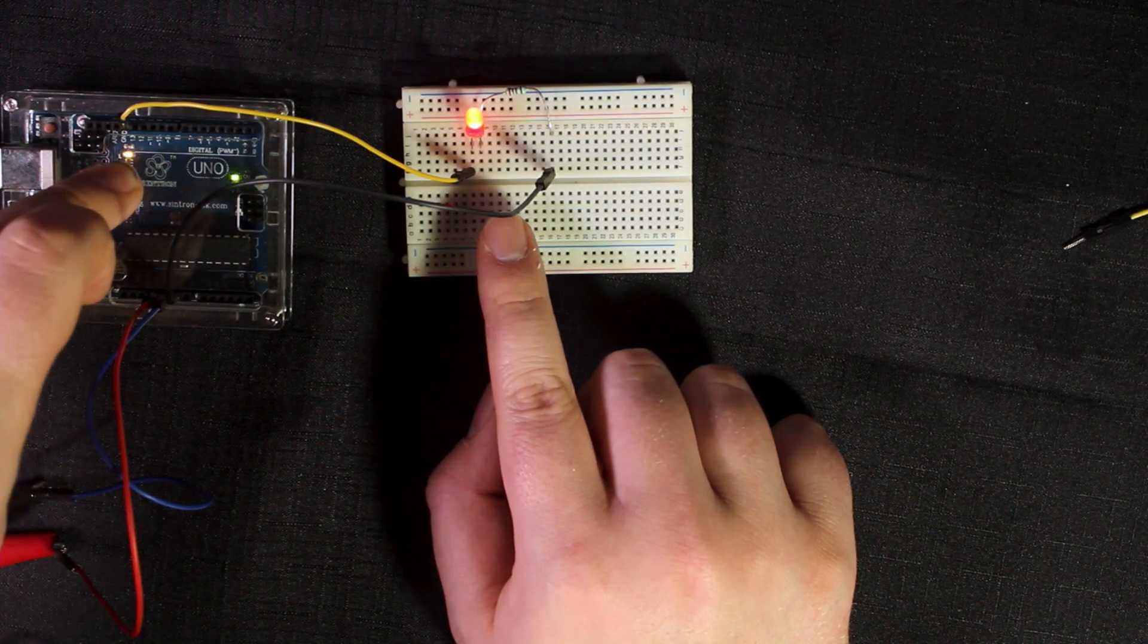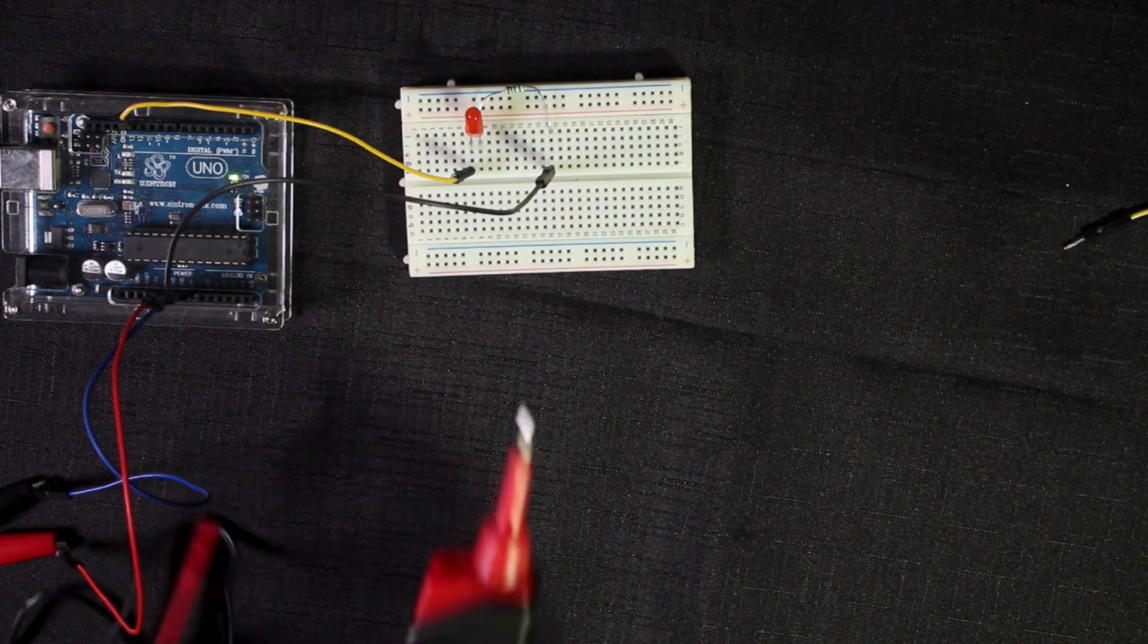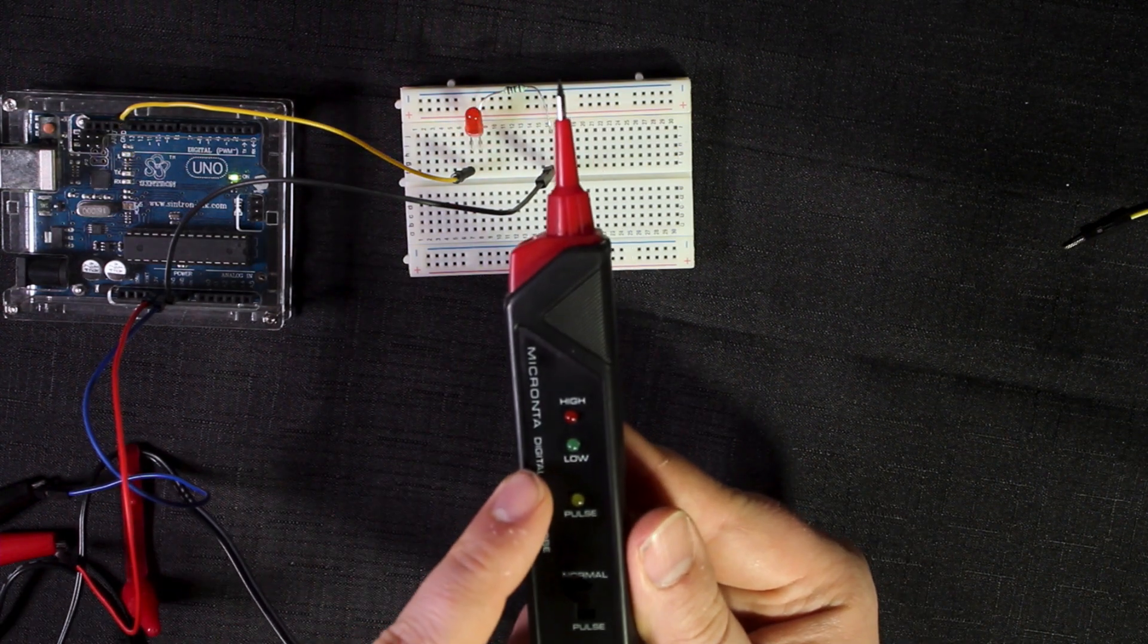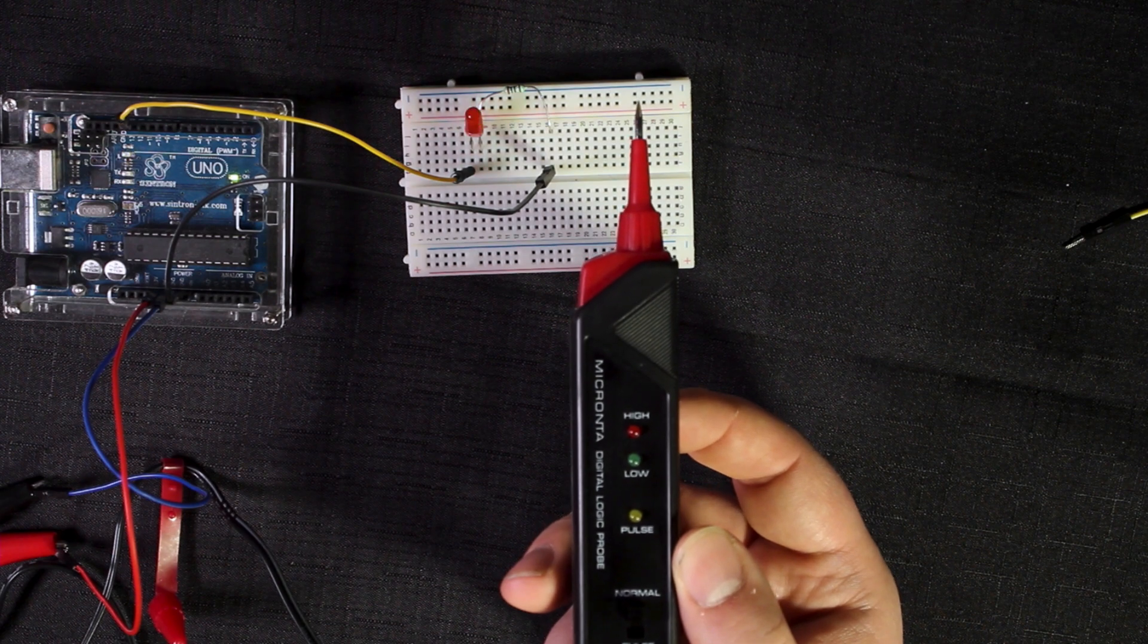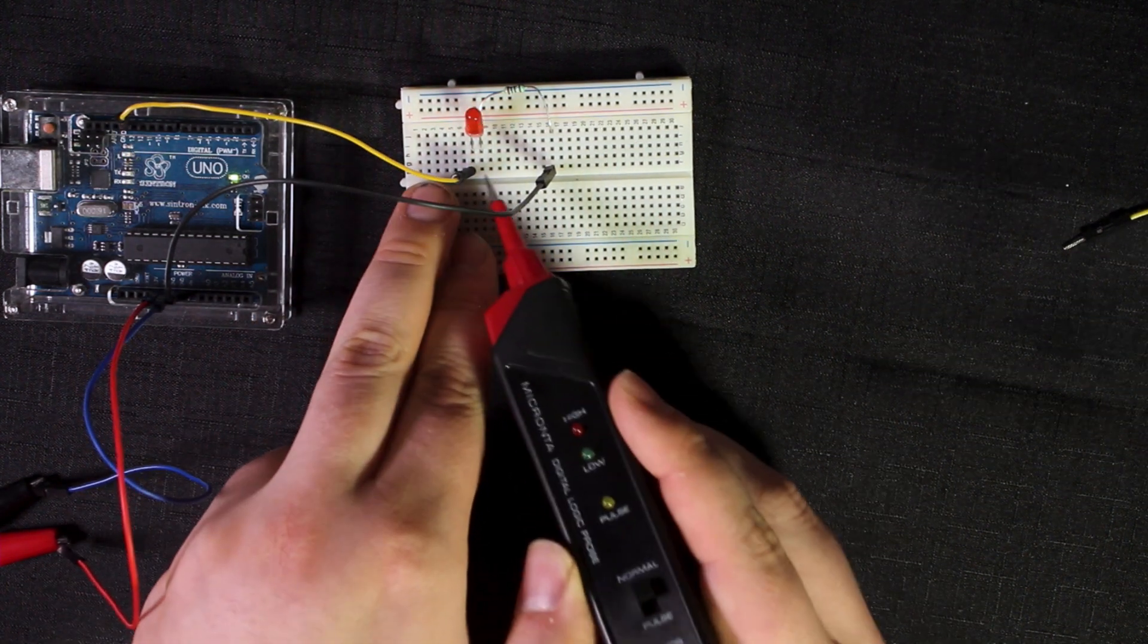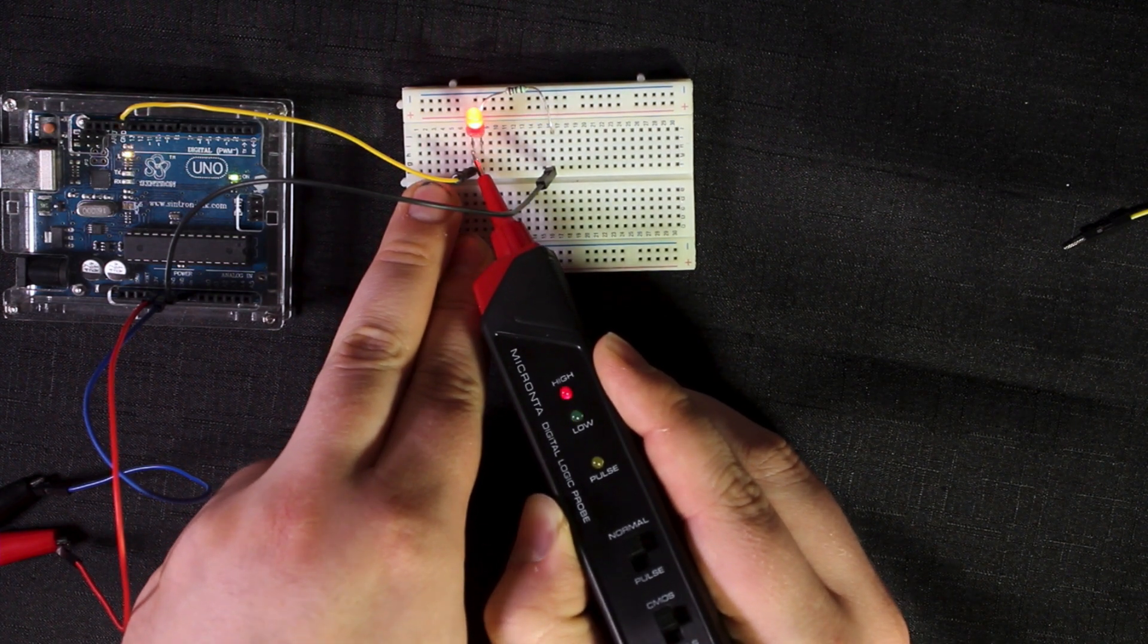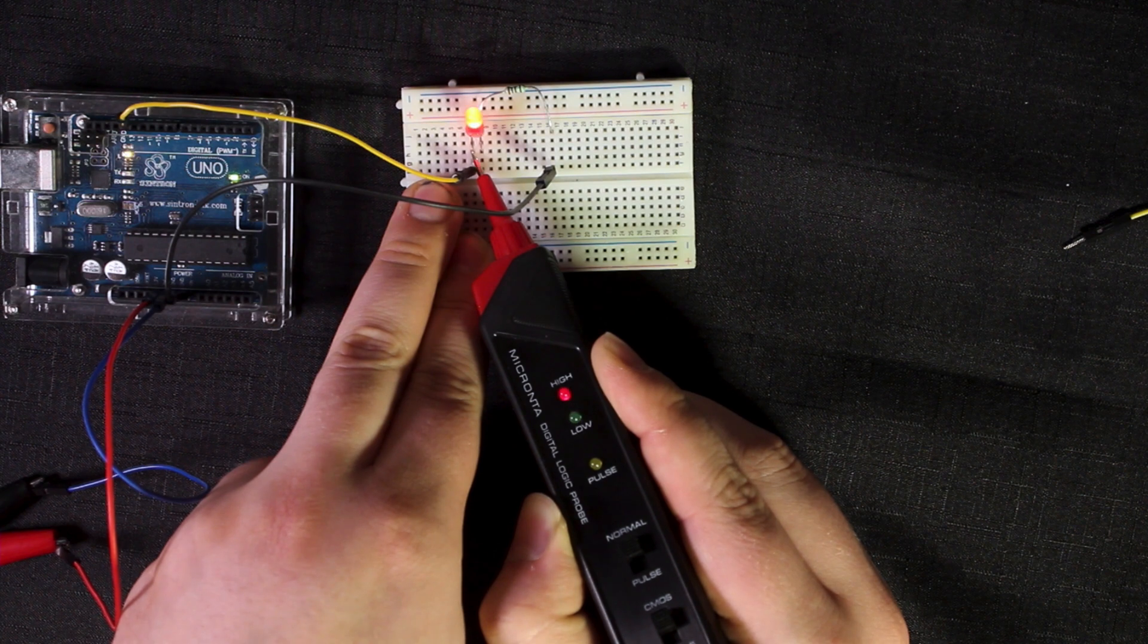I'm using the basic blink sketch under the examples for Arduino. I have my advanced logic probe here to demonstrate how we can test this. If I put the probe end onto the input pin of the LED, we'll see that it says high when the LED is lit, and low when it is off, noted by the red and green LEDs.